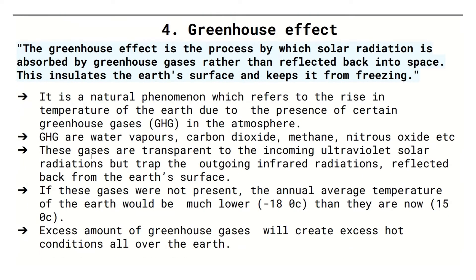The first topic is greenhouse effect. Greenhouse effect is the process by which solar radiation is absorbed by greenhouse gases rather than reflected back into space. This insulates the earth's surface and keeps it from freezing.